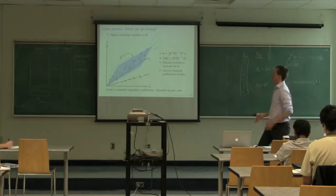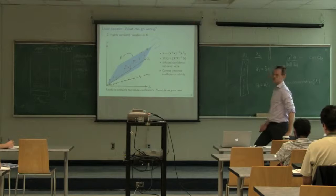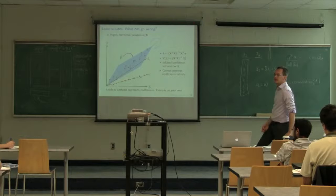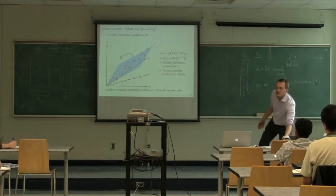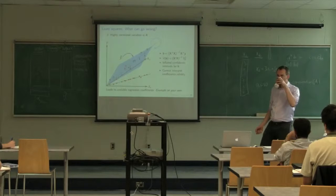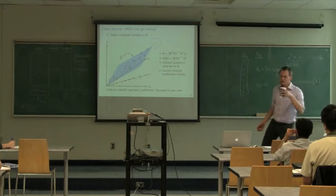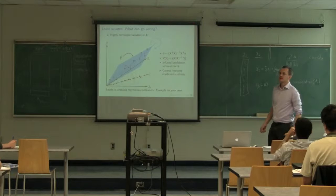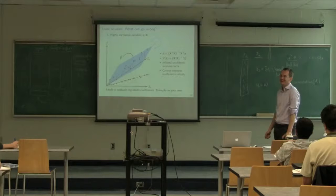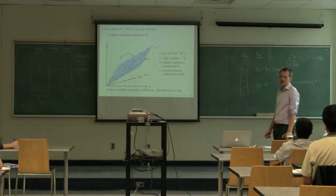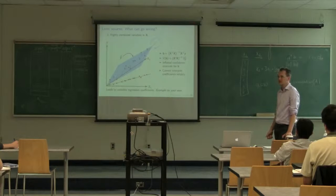Least squares does not have a model for errors in X — it assumes X is measured perfectly. That leads to situations where you can put in garbage as your X variable, compute a regression prediction Y_new, and calculate residuals, but you can never detect whether the input X is of any good quality. So people often do something really bad: they say 'as long as my X1 and X2 values for the new observation are within the range of my training data, I can use my least squares model.' Never do this.